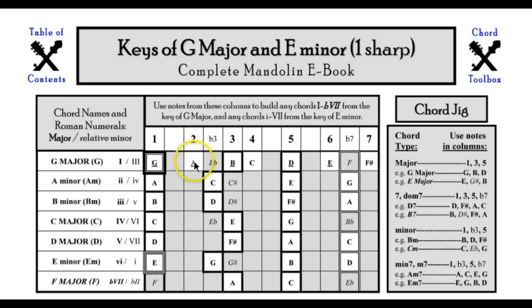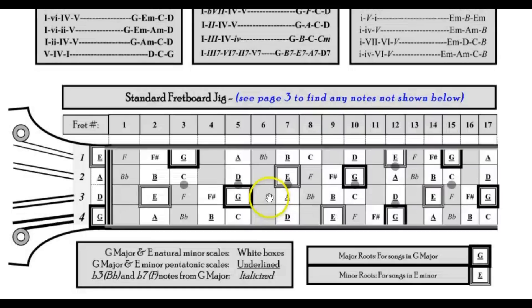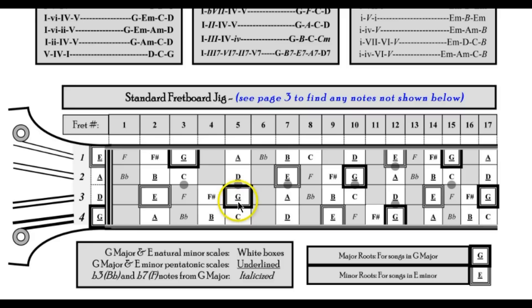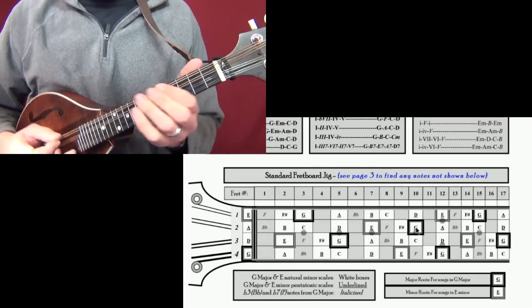The G major scale is all the white box notes — G, A, B, C, D, E, F sharp — and you can see those notes all over the fretboard on the fretboard diagram. To compare these scales side by side today, we're going to focus mainly on a specific position, starting on the 5th fret 3rd string and playing G, A, B, C, D, E, F sharp, G. And that looks like this on the mandolin.